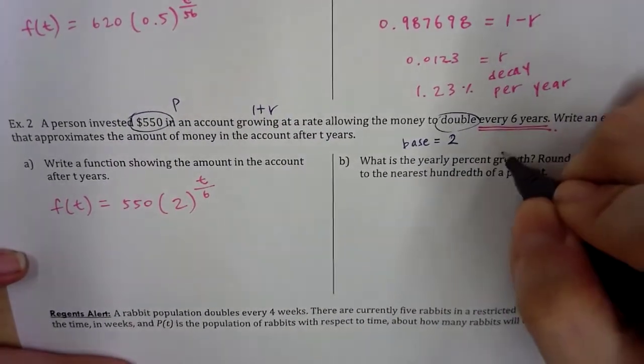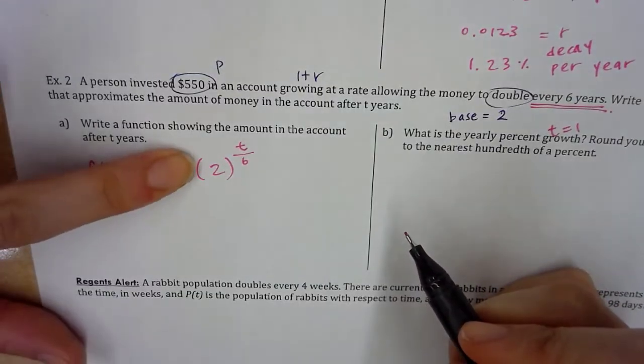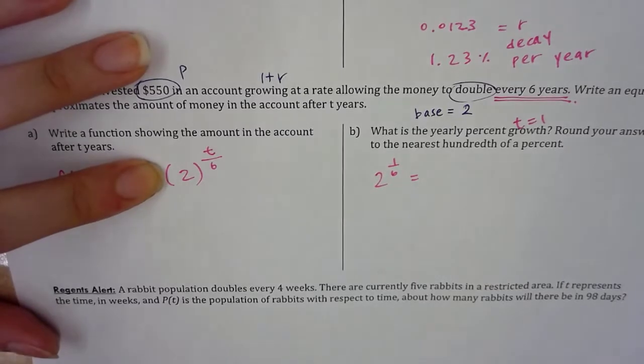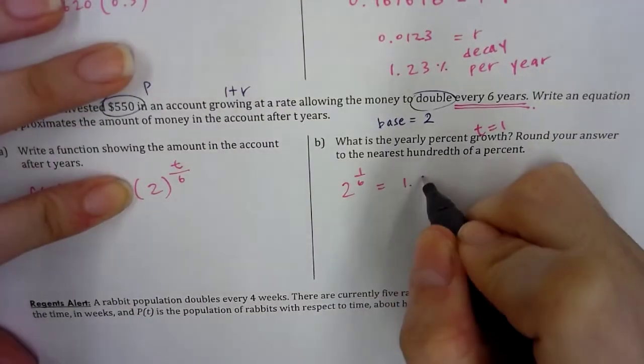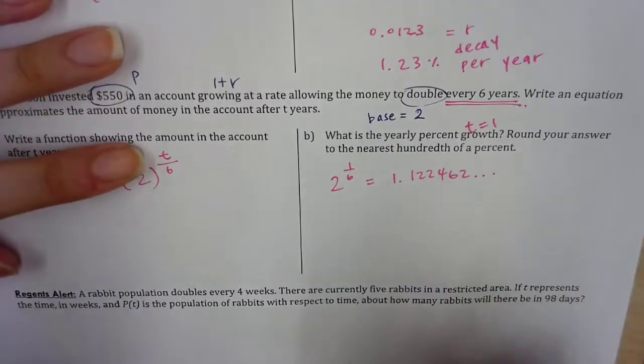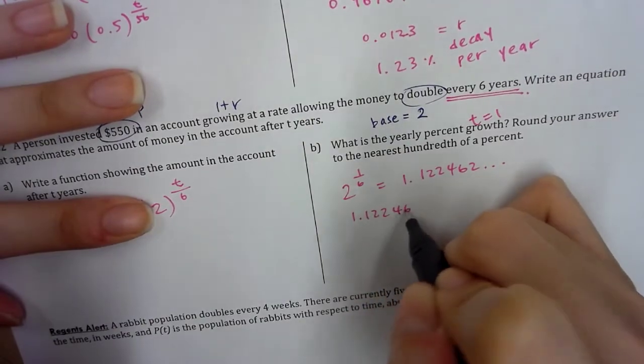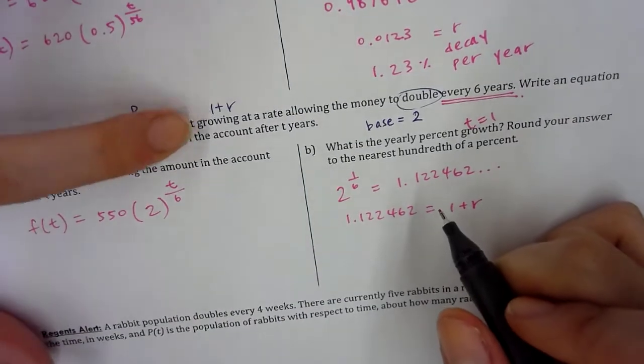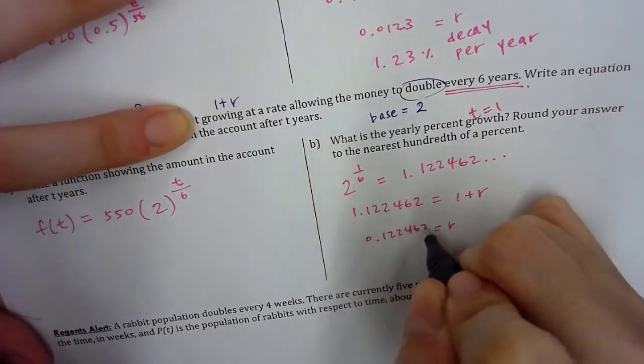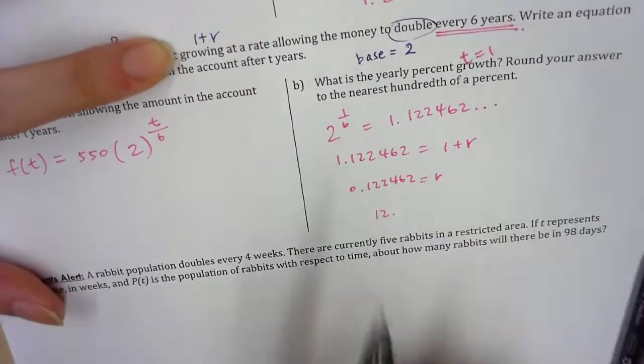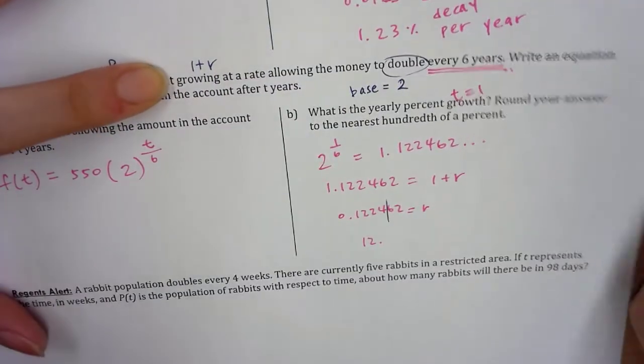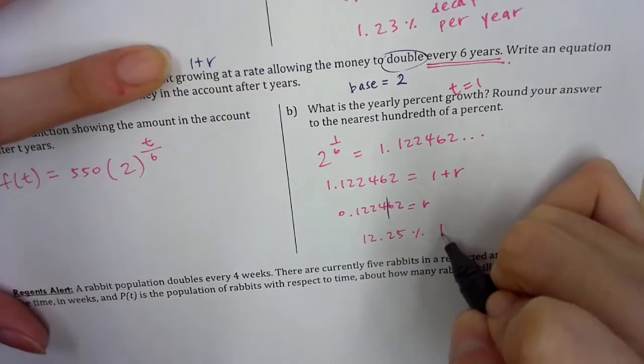The yearly percent growth. So I need to set t equal to 1. And remember, I don't care about the initial amount because I only care about the percentage. So that's where I'm going to set 2 to the 1/6 equal to 1 plus r, plus r this time because it is growth. So r is equal to 0.122462. Multiply by 100. You round it to the nearest hundredth of a percent, so you have to do tenth, hundredth, chop, and you round up. So 12.25% per year.